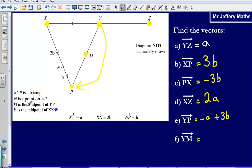Now, we are told that M is the midpoint of YP. So that means it's simply just going to be half of the vector YP. So to go from Y to M, that's just going to be half of YP. Our answer is going to be negative half a plus half of 3b, so we can say that's 1.5b. So Y to M is negative half a plus 1.5b.